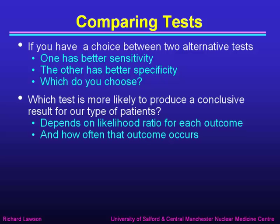We might consider which test is more likely to produce a conclusive result for our type of patients. That depends on the likelihood ratio for each outcome, because we know that the likelihood ratio will change the odds. But it also depends how often that particular outcome occurs, because it's no good having one outcome that will change the odds by a large amount but hardly ever occurs. Most of the time we don't change the odds by very much at all, which means we have a likelihood ratio close to one.